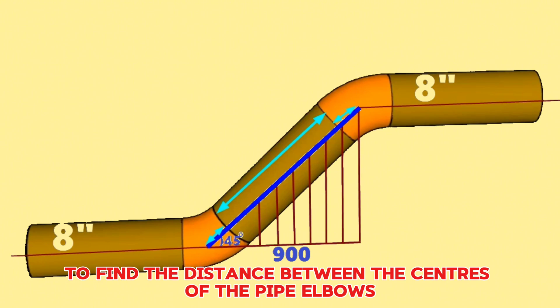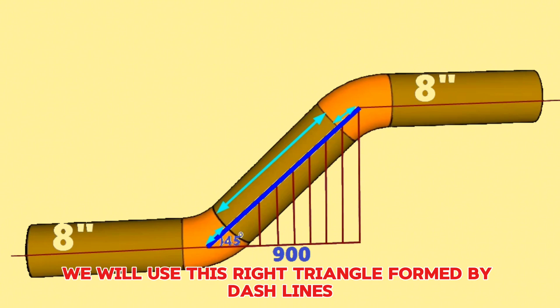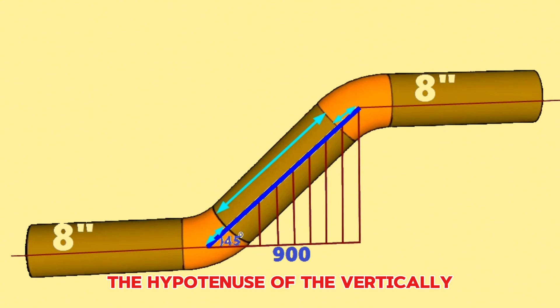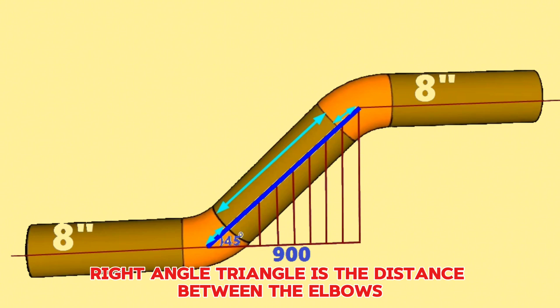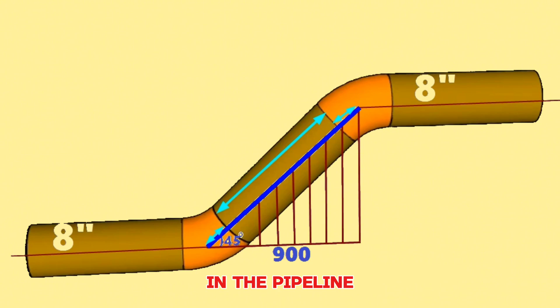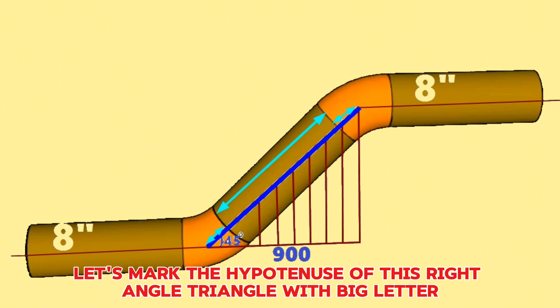To find the distance between the centers of the pipe elbows, we will use this right triangle formed by dashed lines. The hypotenuse of the right-angle triangle is the distance between the elbows in the pipeline. Let's mark the hypotenuse of this right-angle triangle with big letter H.